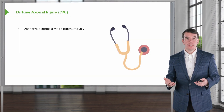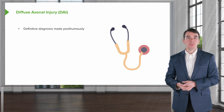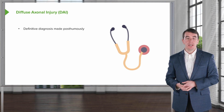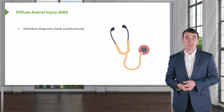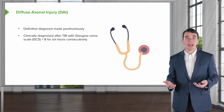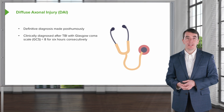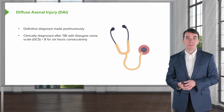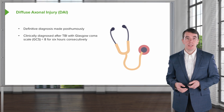To reiterate regarding diffuse axonal injury: a definitive diagnosis is made only at autopsy. Clinical diagnosis is made in patients who have a severe TBI, often with a Glasgow Coma Scale of less than eight for a prolonged period of time.